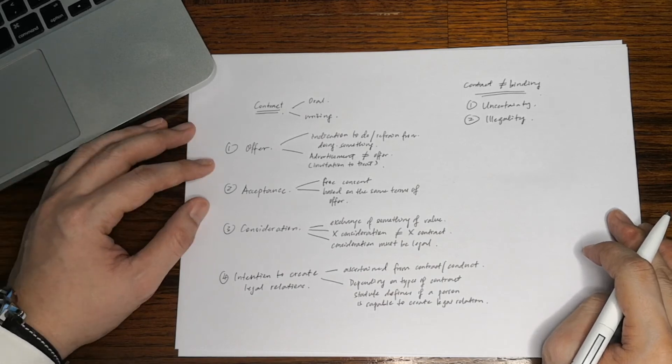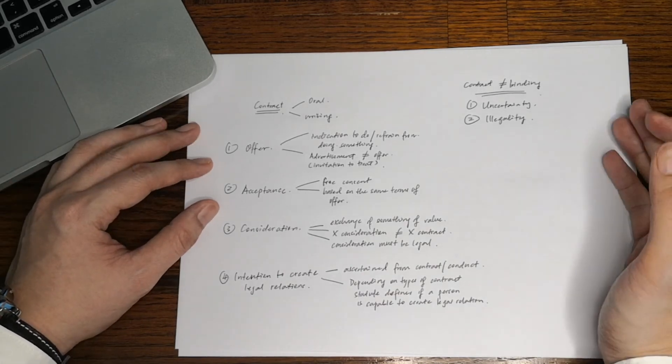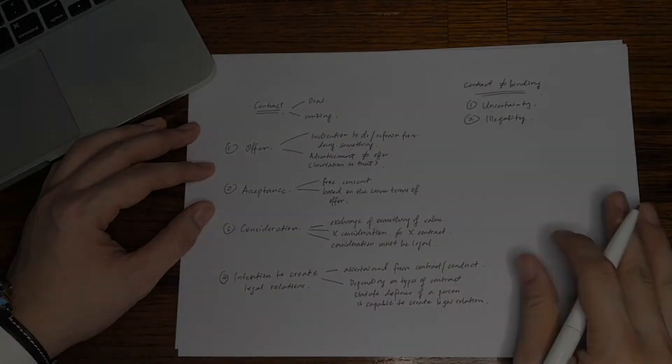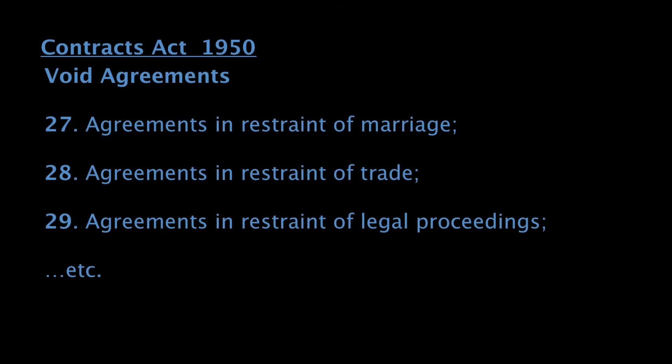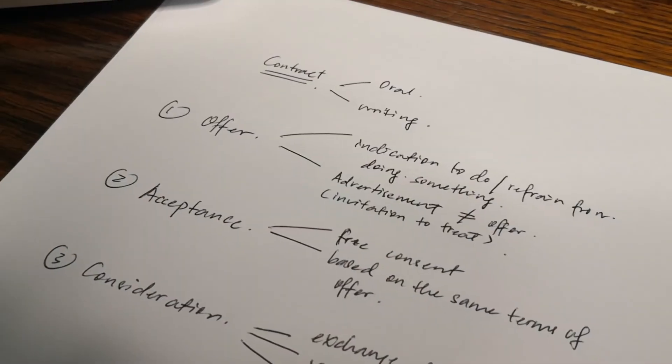In Malaysia, the Contracts Act 1950 regards certain objects of the contract to be void, such as an agreement in restraint of merit, an agreement in restraint of trade, an agreement in restraint of legal proceedings, and so on.